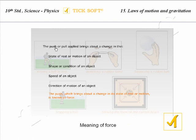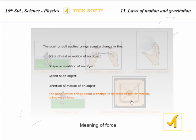The push or pull applied brings about a change in the state of rest or of uniform motion of an object, the shape or condition of an object, the speed of an object, and the direction of motion of an object. Striking a ball explains the change in speed; striking a carom coin changes its direction. The push which brings about a change in its state of rest or of motion is known as force.